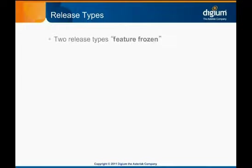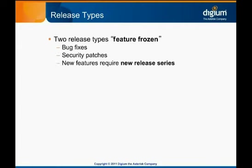Modern Asterisk release series come in two types. Both types are feature frozen, which means that only bug fixes and security updates will be applied to that series. The introduction of significant new features requires a new release series. While this sometimes means that the very latest features aren't immediately available in a production release series, it ensures that each series is consistent and supportable.